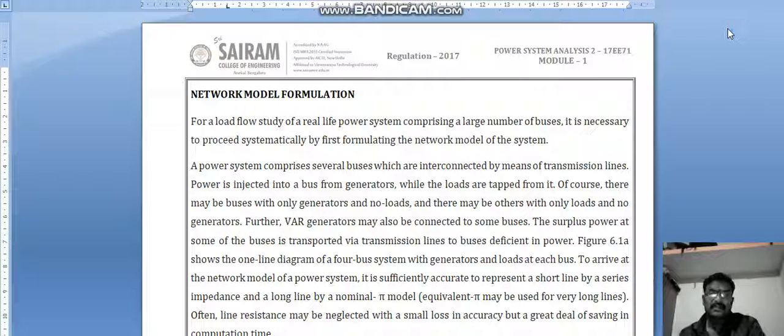So network model formulation is the method to find the voltage value, current value, and power value from the network. Your power system comprises several buses which are interconnected by means of transmission lines. Power is injected into a bus from generators while the loads are tapped from it.